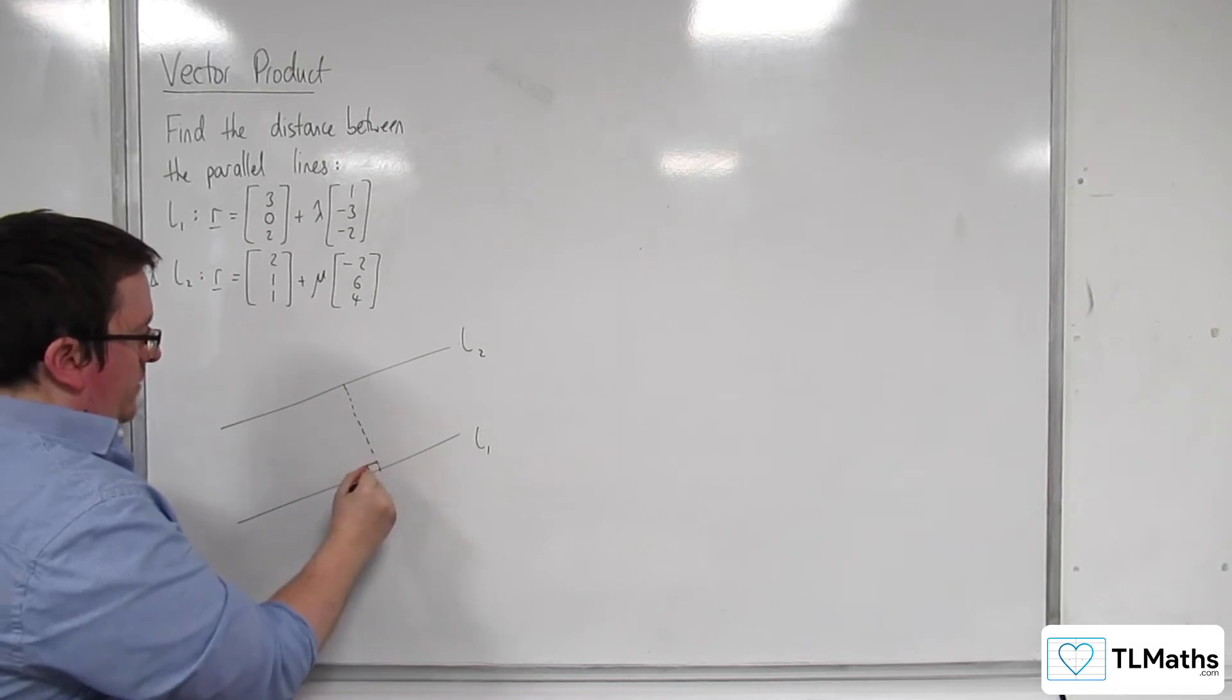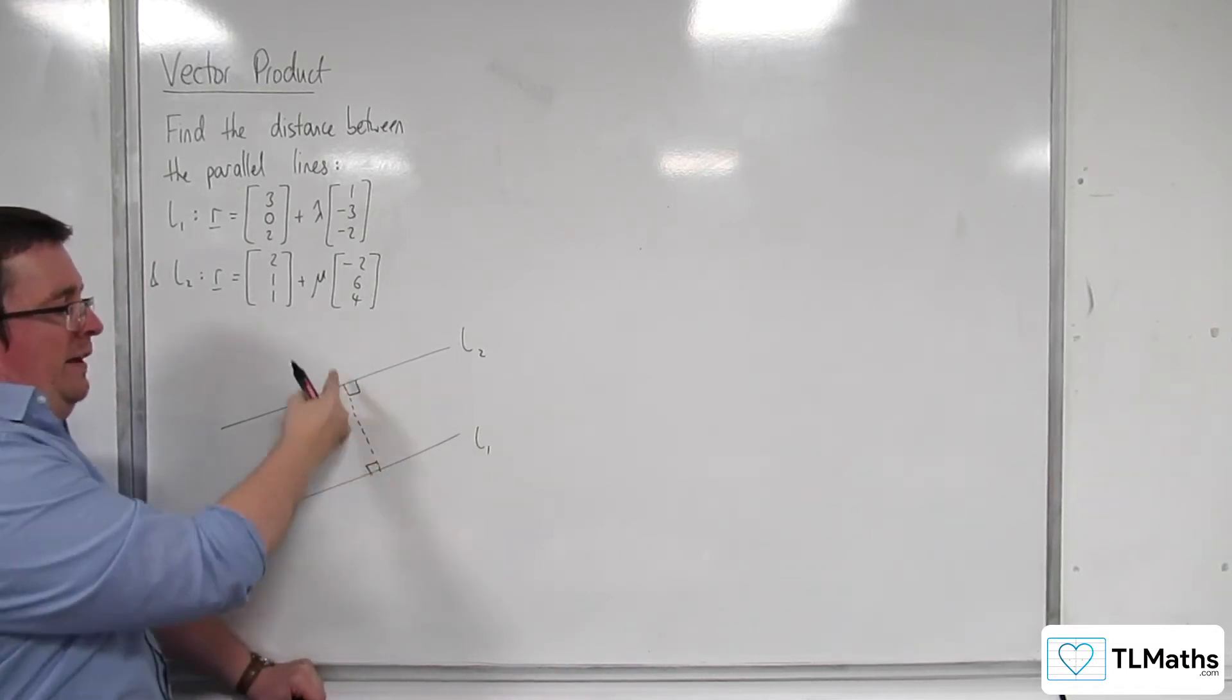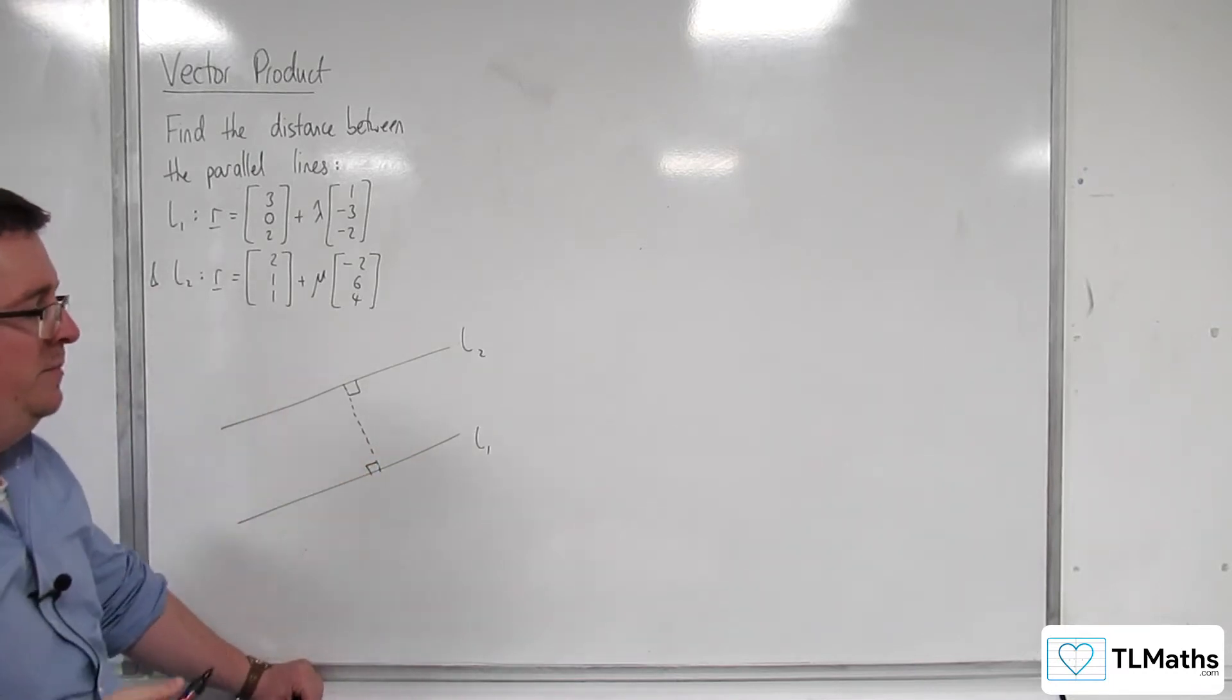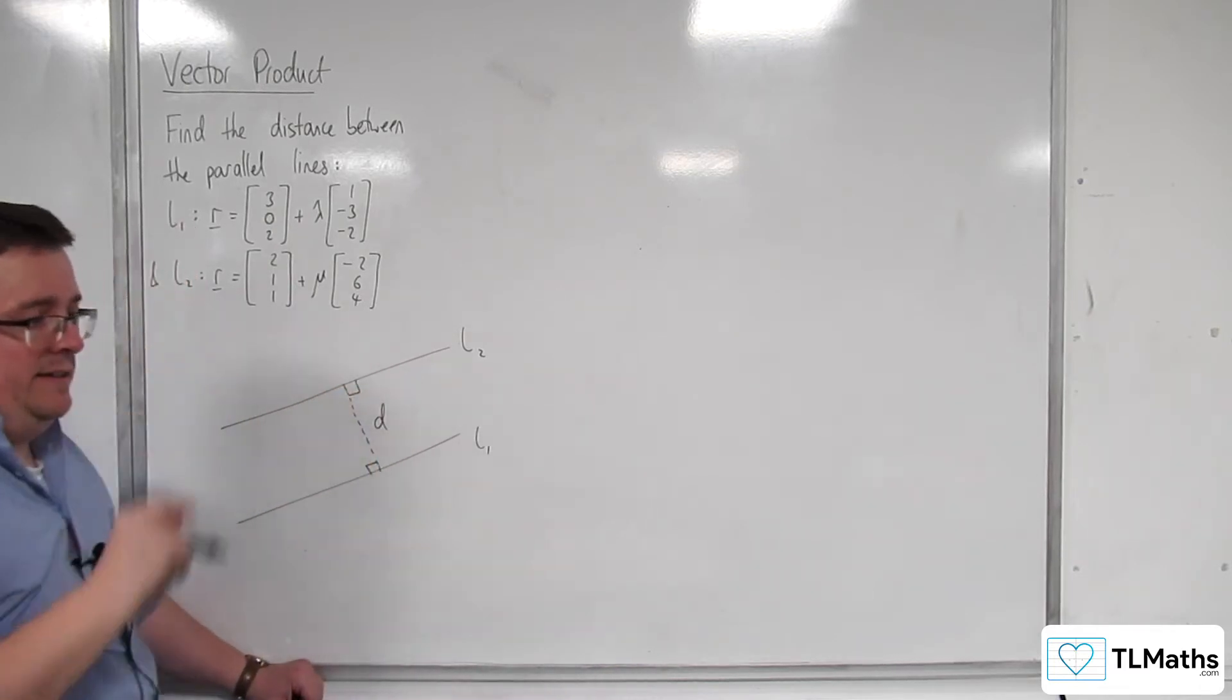I need to find that length, knowing that that line will make a right angle with both L1 and L2, so it's going to be perpendicular to both. So let's call this distance D.